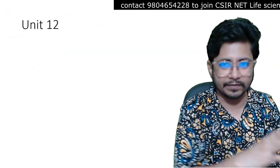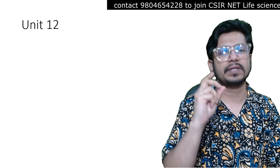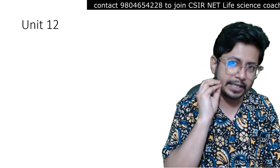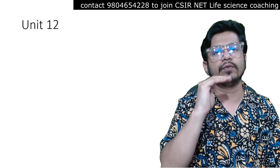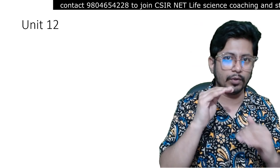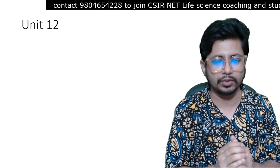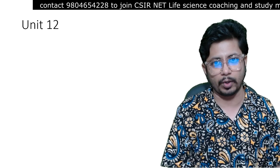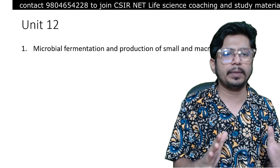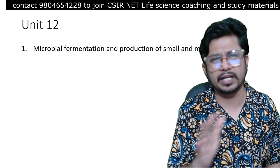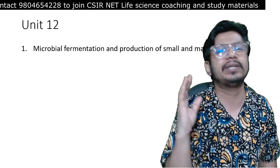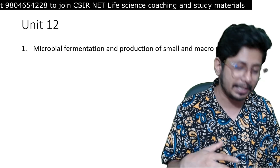Like every single video in our syllabus analysis series, I cut and pasted the syllabus from the CSIR NET website. I'm going to give you a color coding: green for most important topics, yellow for moderately important topics, and red for least important topics. Starting with microbial fermentation and production — not at all important, so there's no color code for that one.